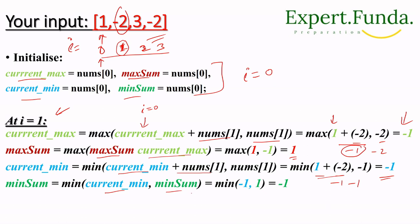Now we update min_sum — that's the minimum sum so far. From the start up to this position, the minimum is -2. We check: what is the minimum from here to here? We have 1 and -2. The current_min is -1, and we update min_sum accordingly. The maximum so far remains at 1.